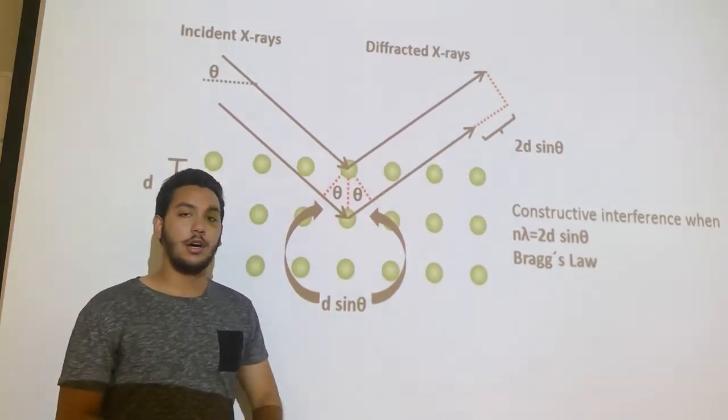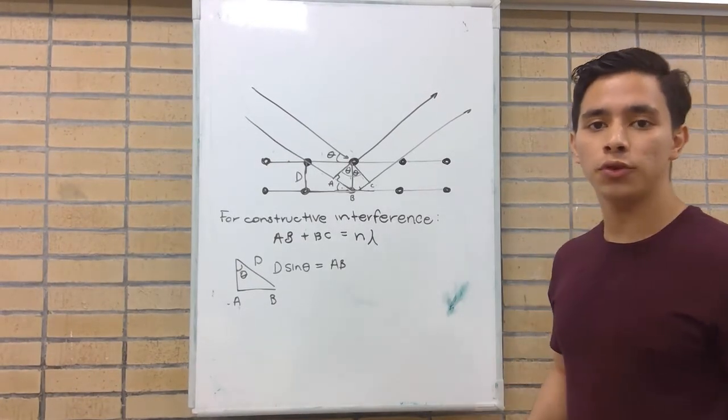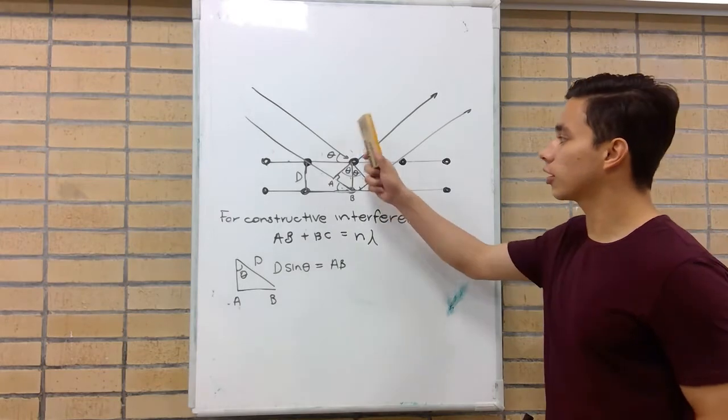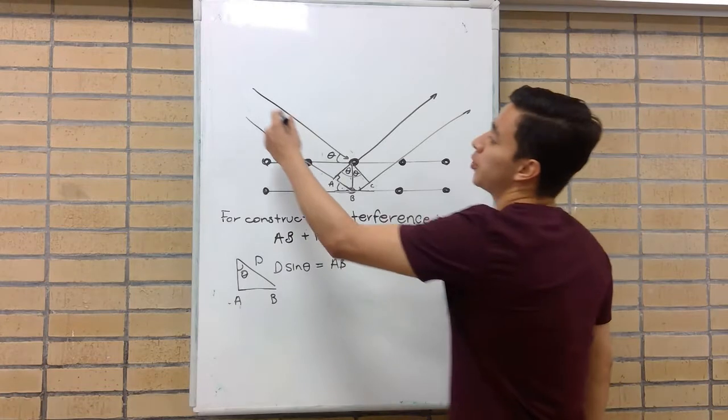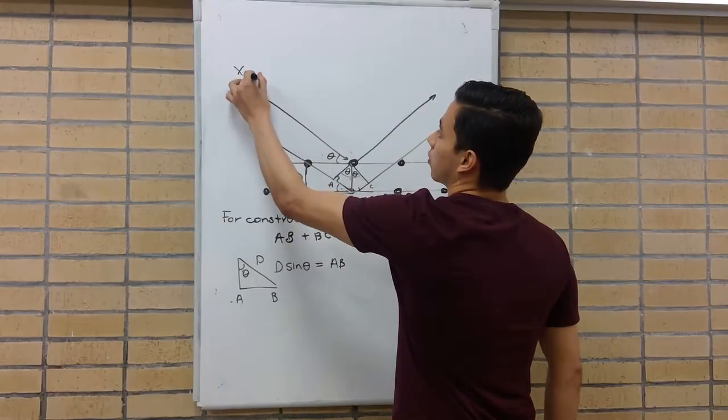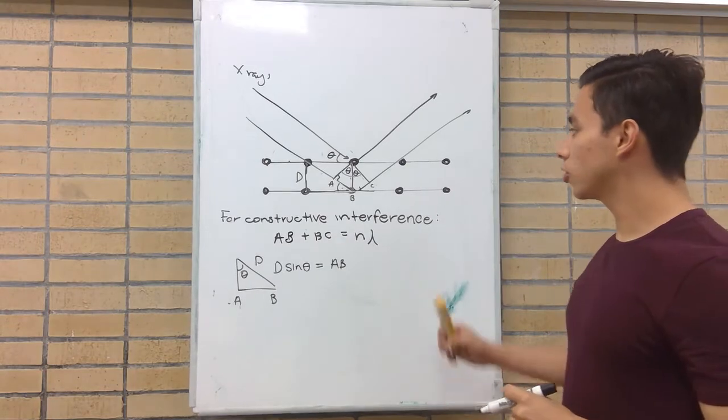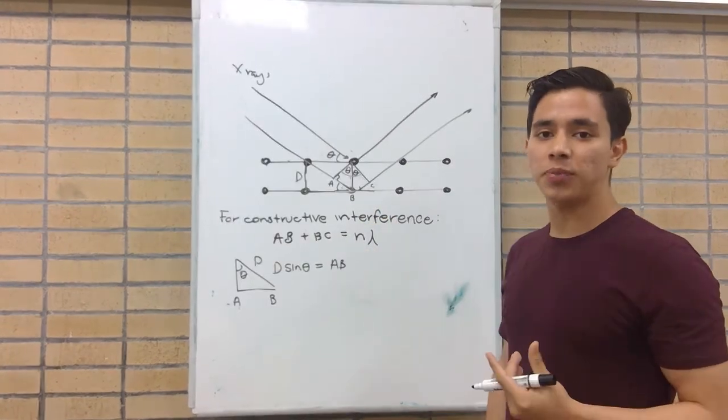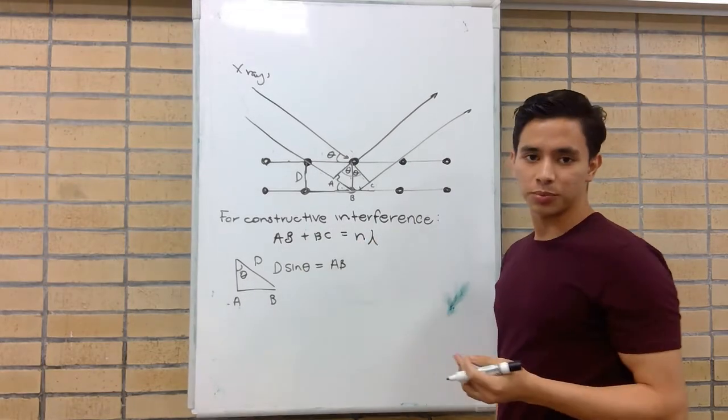In order to derive the Bragg formula, we want to take a closer look at what happens in X-ray diffraction. The two beams of X-rays will create a constructive interference just if their difference in path is equal to a multiple integral of lambda.